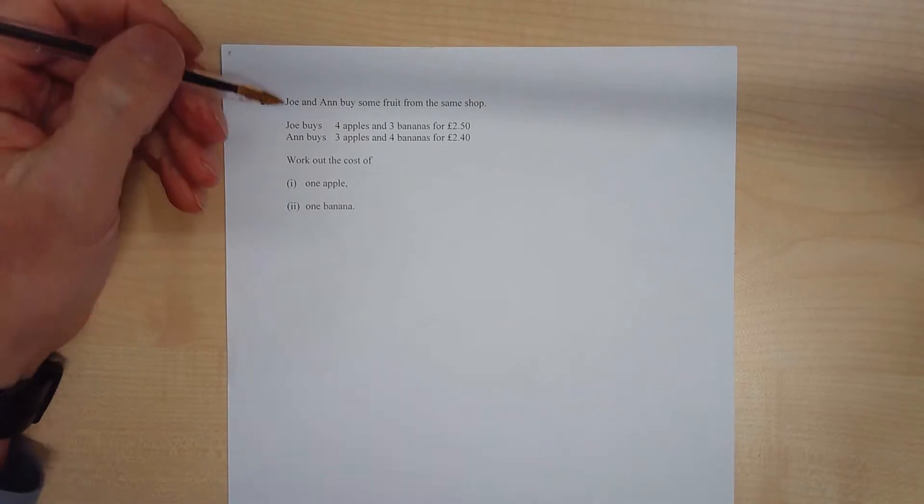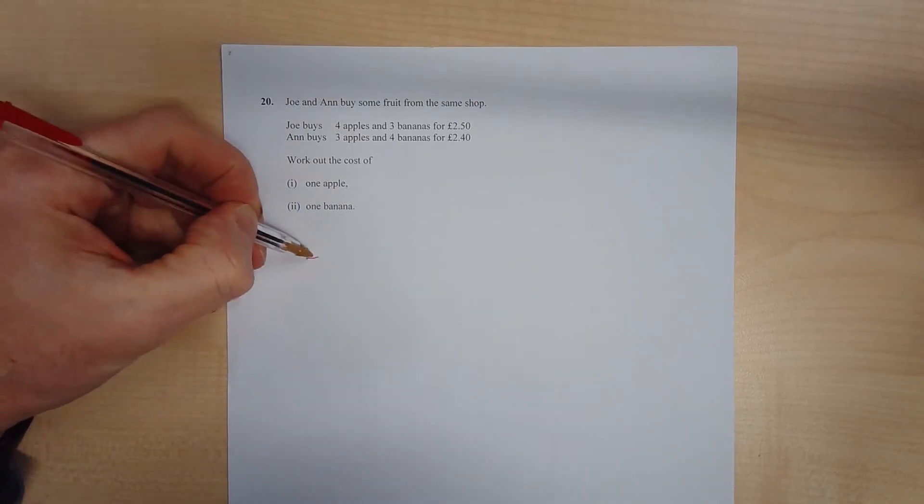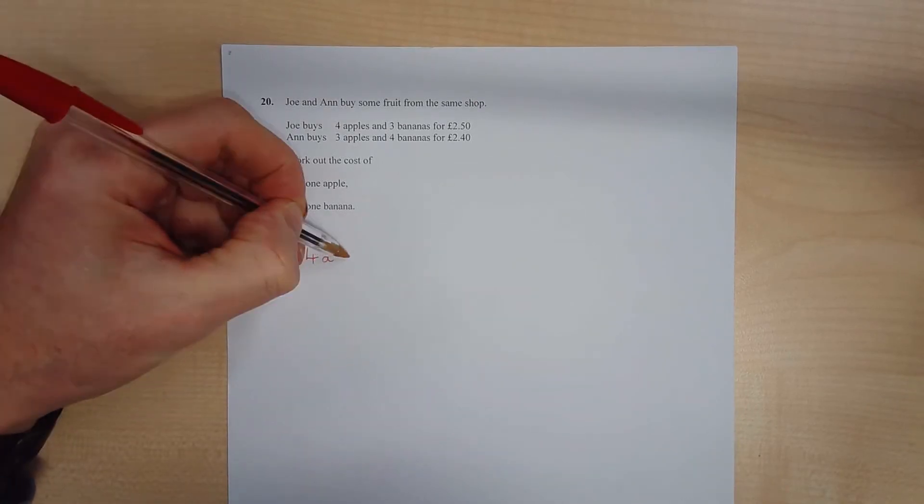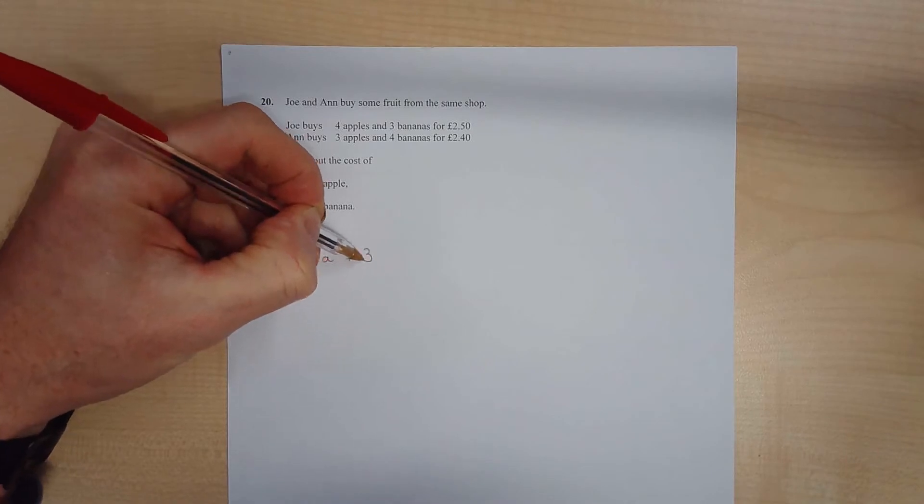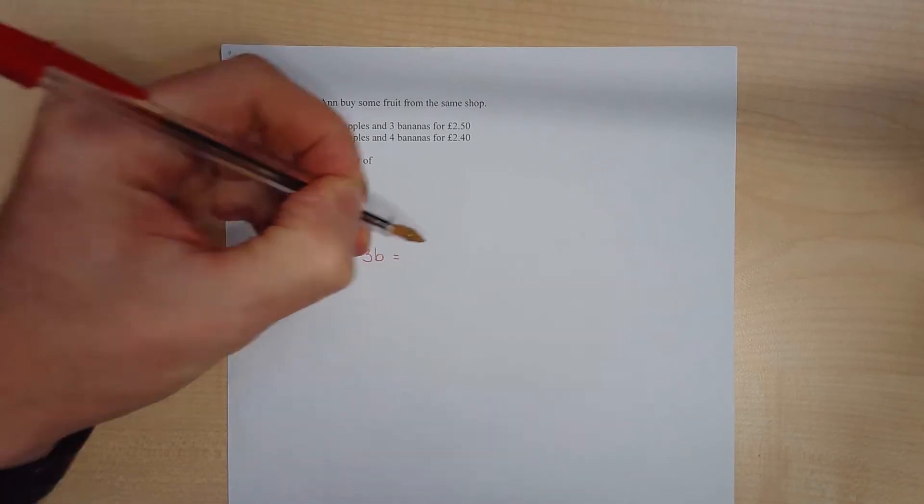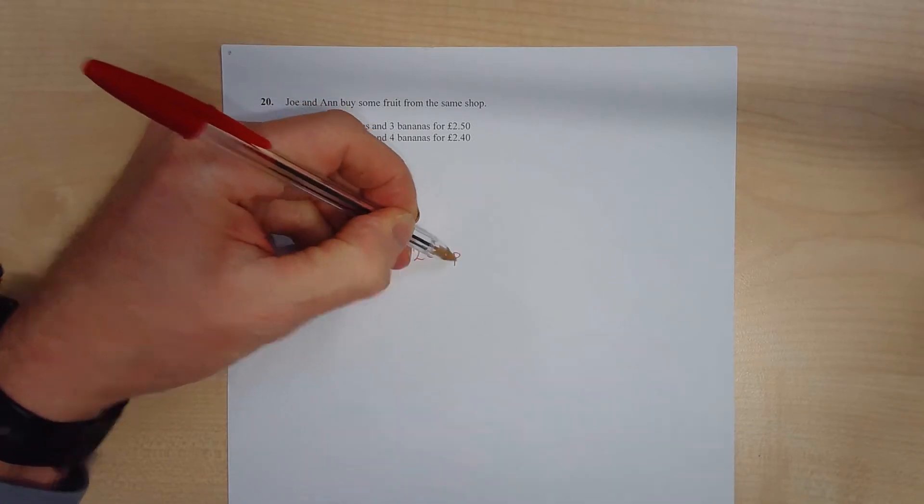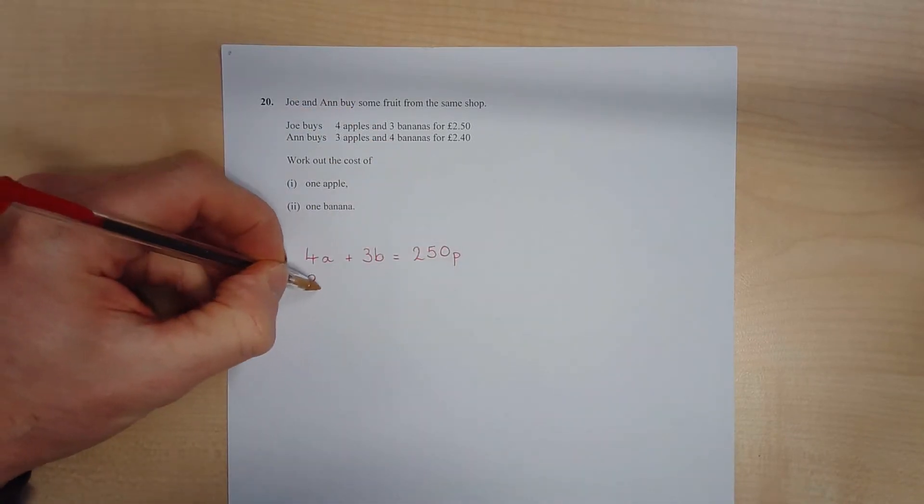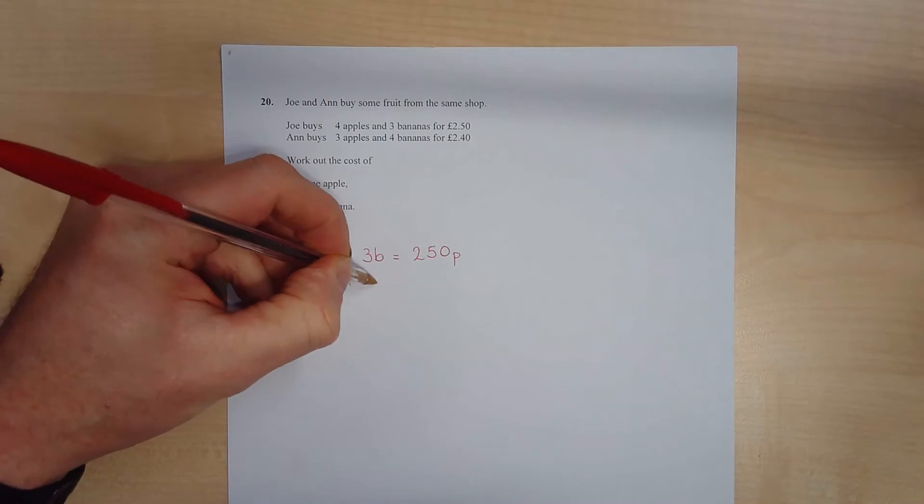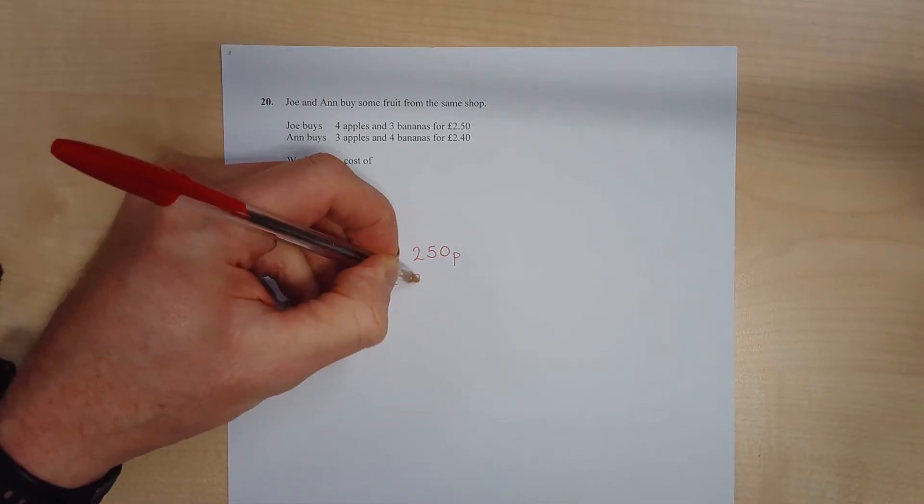Okay, so simultaneous equations. Best thing to do is write these out as we would normally see them. So 4 apples plus 3 bananas, and I'm going to change this to 250p. I think that might be easier in a bit.